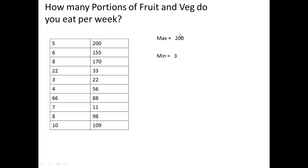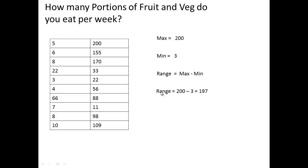Then we calculate the range. The range is the difference between your maximum, which was 200, and your minimum, which was 3. So your range is maximum minus minimum: 200 minus 3, which gives us 197. Our range is 197 — that's the gap between the smallest and the biggest.